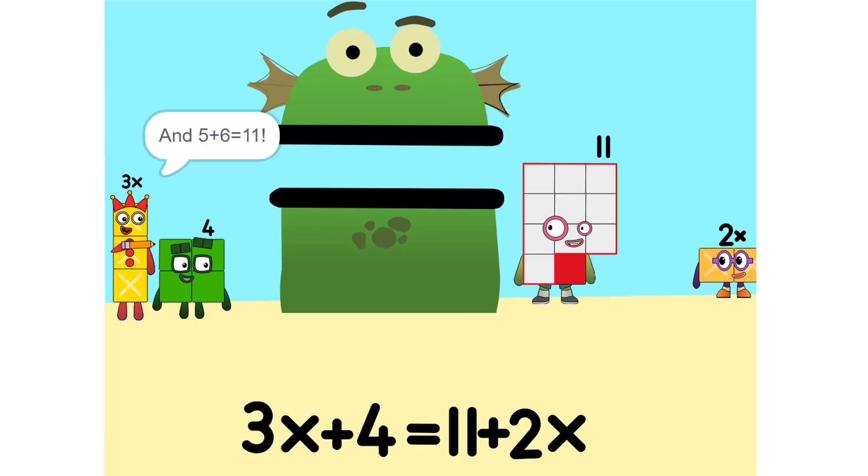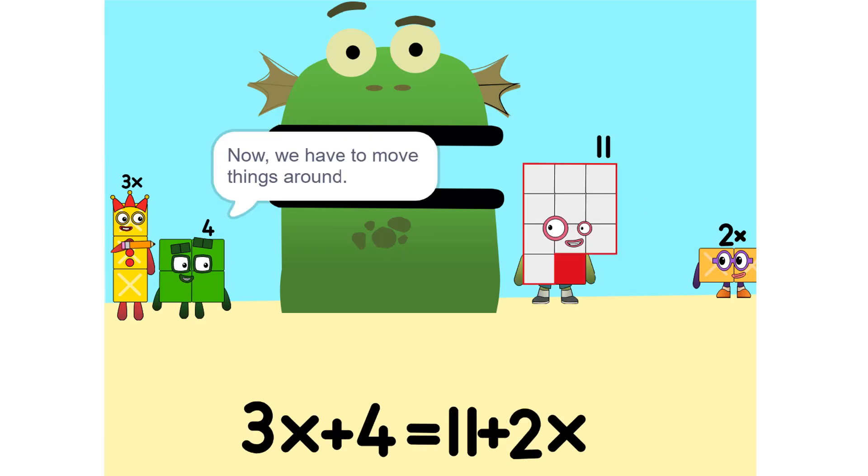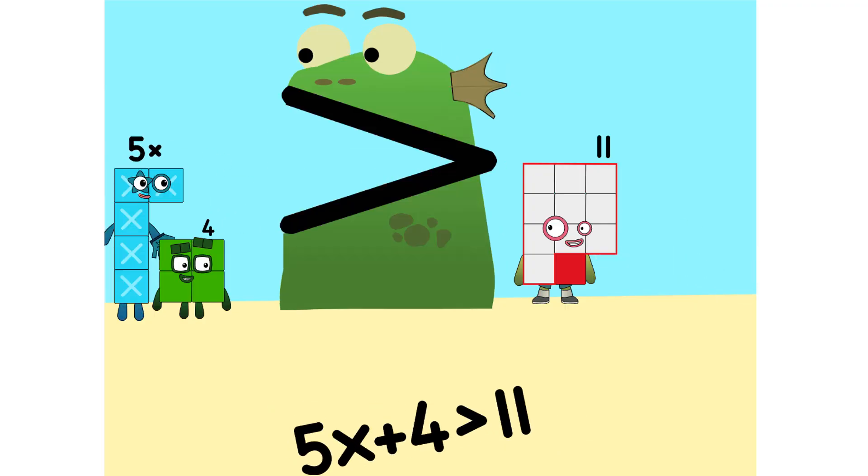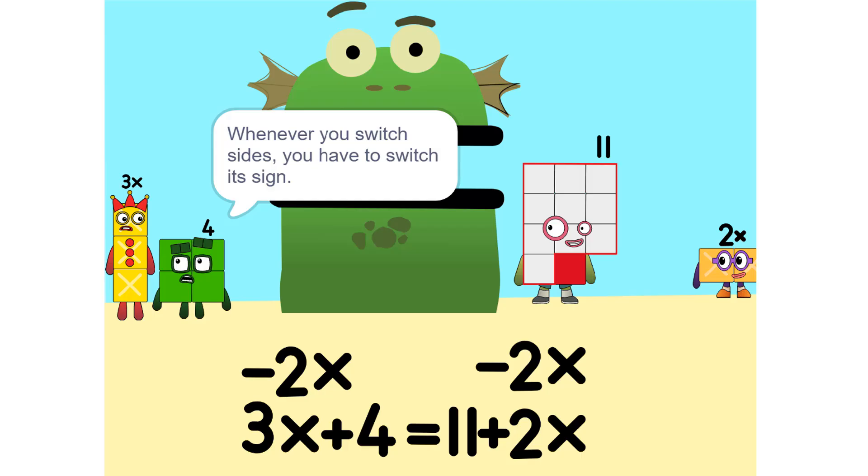And 5 plus 6 is 11. Yeah. Now we have to move things around. We have to move this 2X to this side. So, 5X. Whenever you switch sides, you have to switch its sign. So if it's positive, it becomes negative and vice versa.